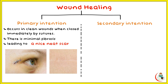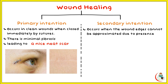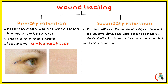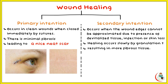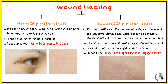Healing by secondary intention occurs when wound edges cannot be approximated due to the presence of devitalized tissues, infection, or skin loss. The healing occurs slowly by granulation tissue, resulting in more fibrous tissue and ending in an unsightly or ugly scar which is broad, not flat with the surface, pigmented or depigmented, with stitch marks as shown in the picture.